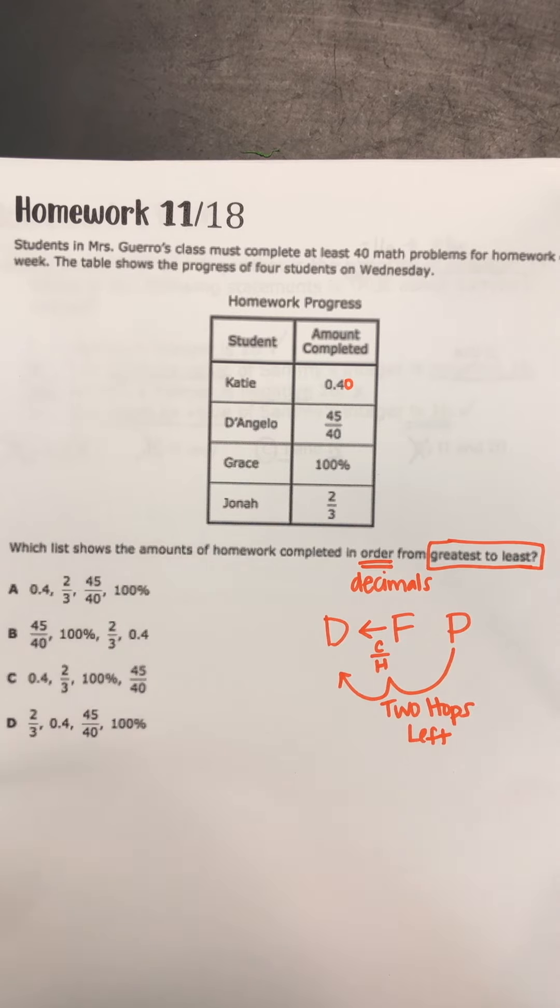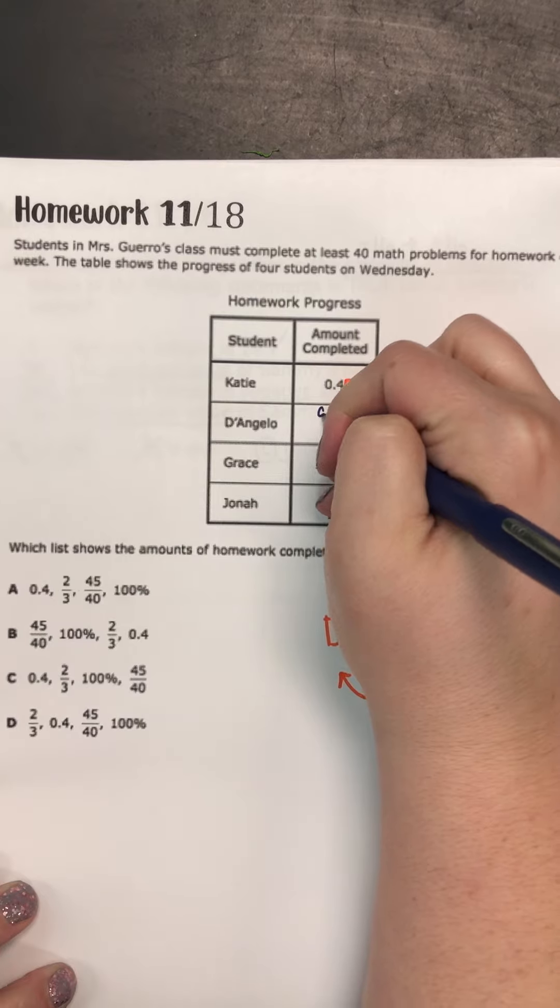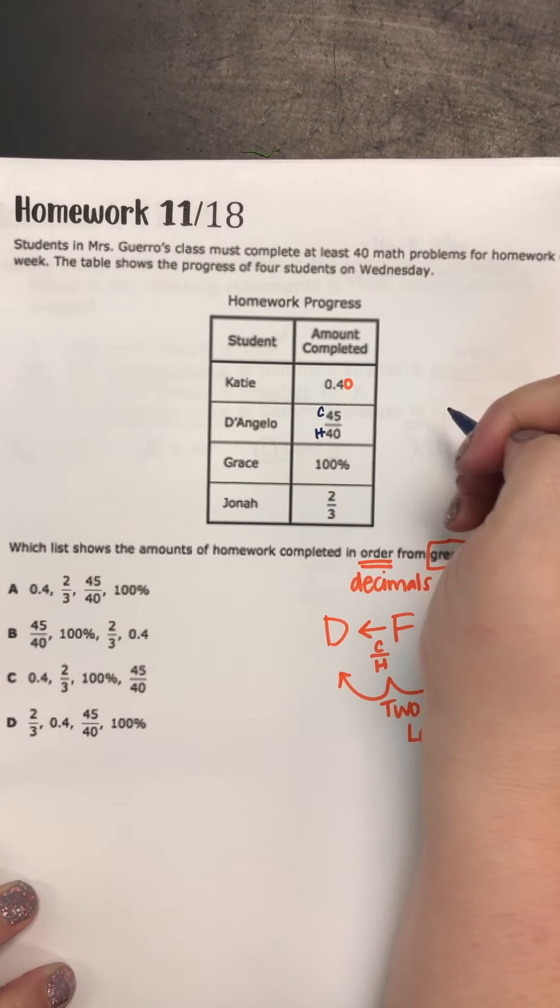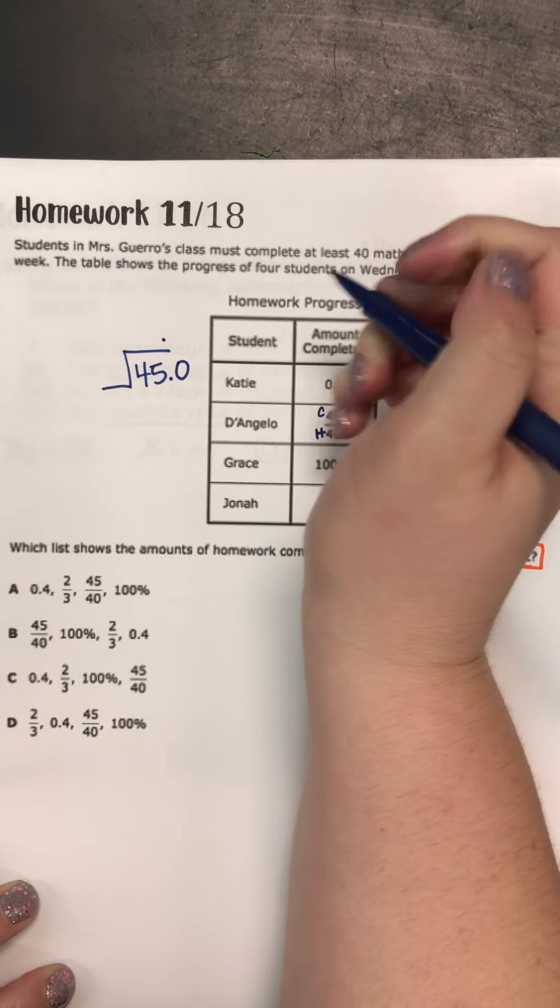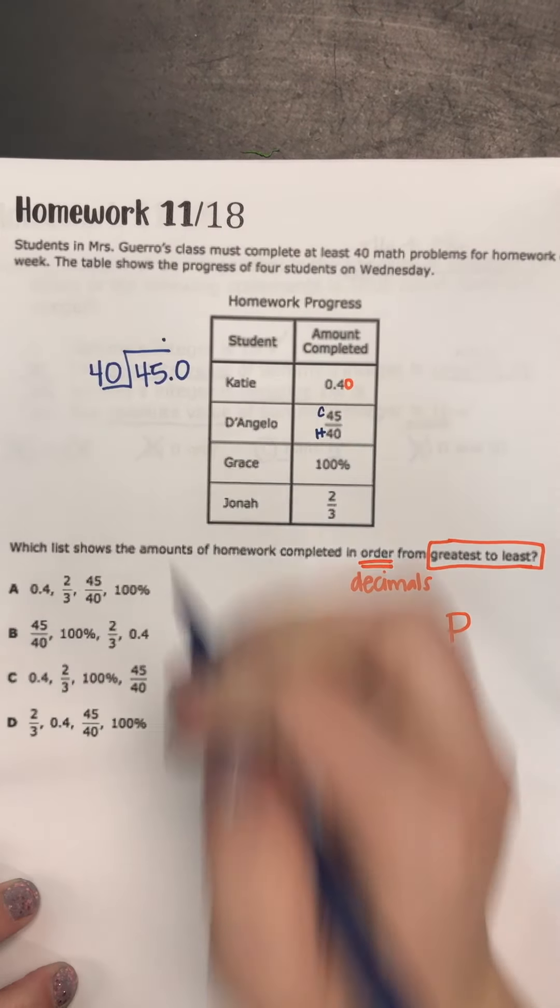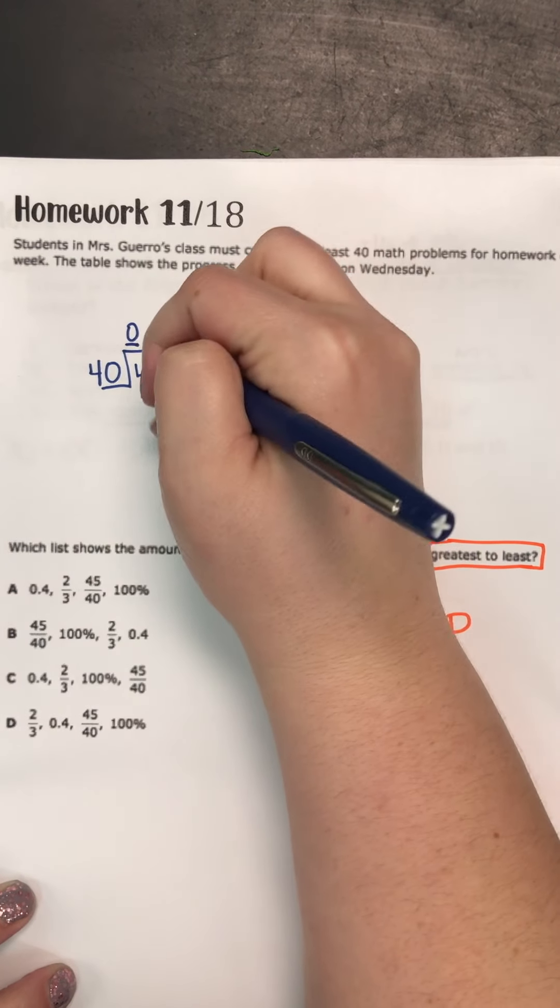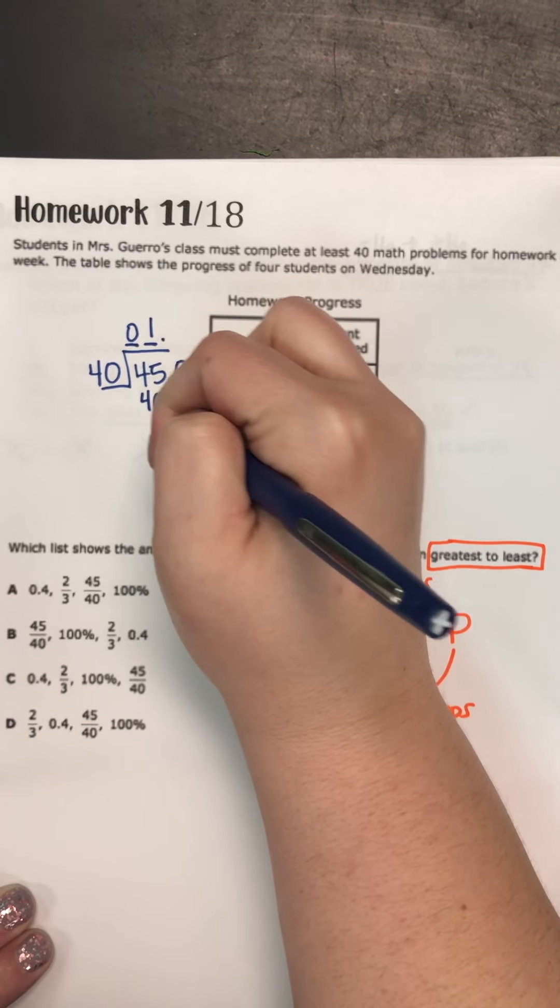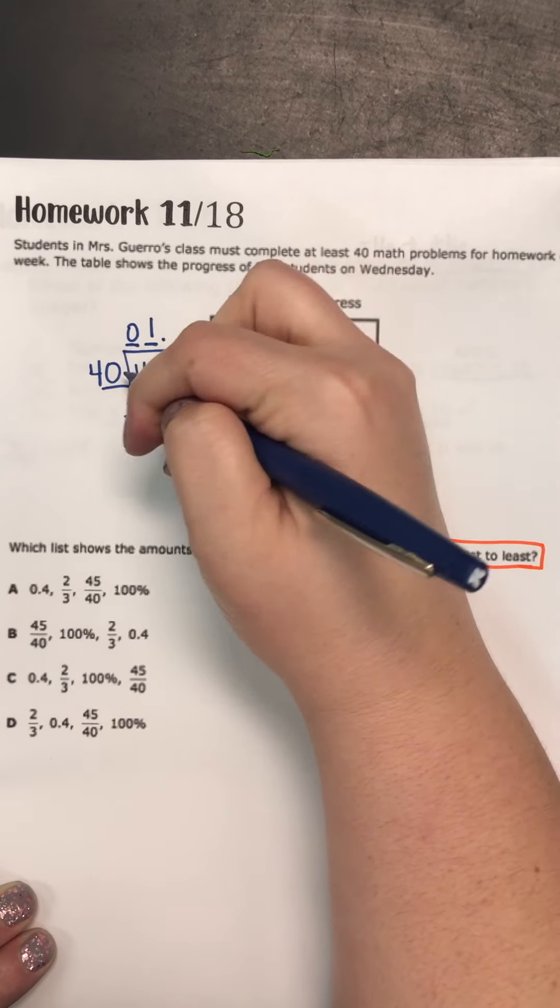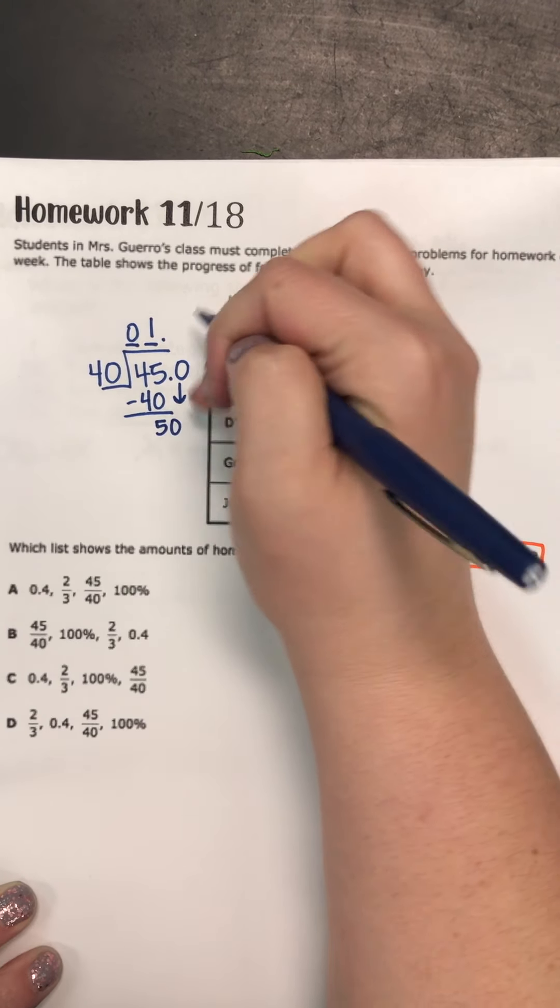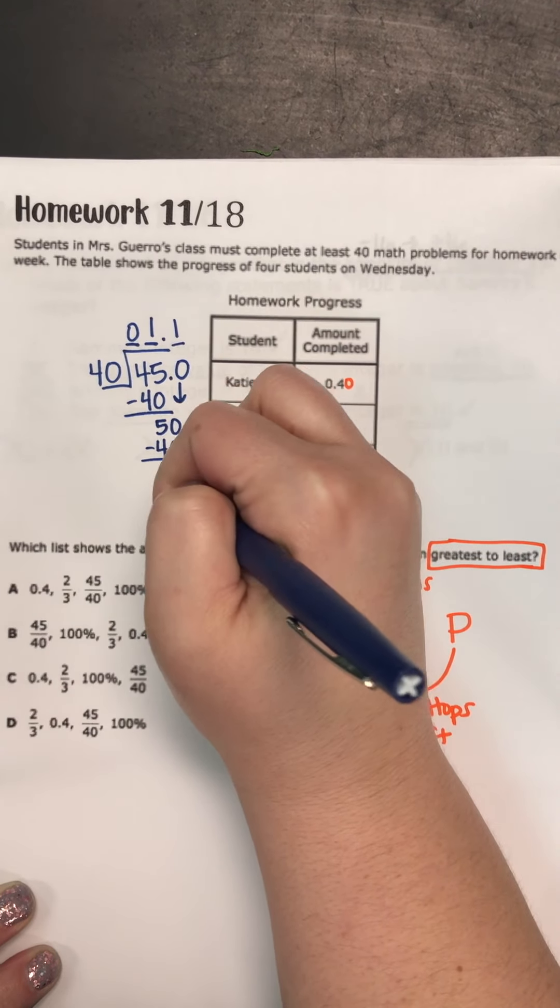Our second number is a fraction. So remember in order to make a fraction to a decimal, we're going to cowboy and horse. So I'm going to label cowboy and horse. 45 is the cowboy, boots, hat, donut. And 40 is my horse. 40 does not go into four, but it does go into 45 one time. We subtract and we get five, bring down our donut. 40 does go into 50, again, one time.